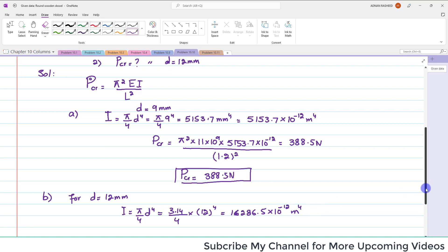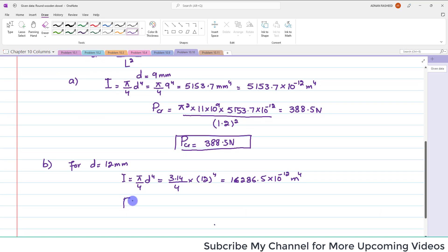So when you calculate, it will be 16286.5 times 10 to the power minus 12 meters to the fourth. Now you will put in the formula of P critical as P critical is equal to pi squared E I divided by L squared. You can put the value pi squared multiply by E is 11 gigapascals, so 11 times 10 to the power 9, and I is for this is 16286.5 times 10 to the power minus 12.